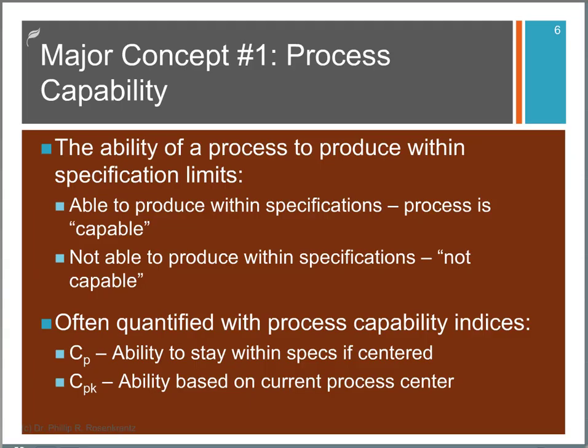This brings us to the first major concept of statistical process control, which is process capability. Simply stated, process capability is the ability of a process to produce within specification limits. When there are no assignable causes or tampering going on, the only process variation we have is the common cause or built-in or natural variation. And if that's the only kind of variation we have, and if we're still able to produce within specifications, then the process is called capable. And if it can't produce within specifications, then it's not capable.